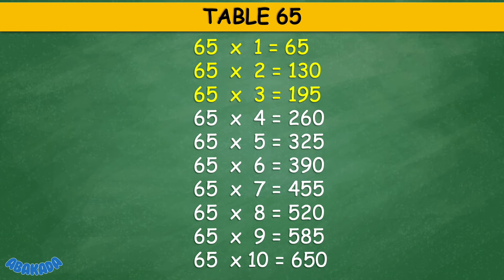Table 65: 65 times 1 equals 65, 65 times 2 equals 130, 65 times 3 equals 195, 65 times 4 equals 260, 65 times 5 equals 325, 65 times 6 equals 390, 65 times 7 equals 455, 65 times 8 equals 520, 65 times 9 equals 585, 65 times 10 equals 650.